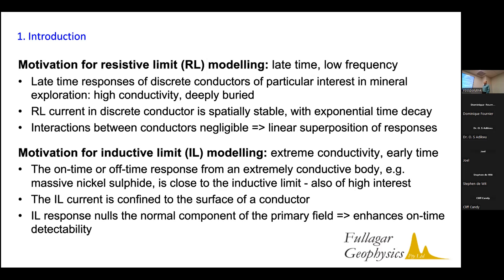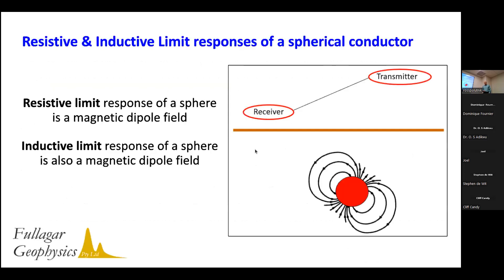Likewise in the inductive limit, especially when looking for nickel, we often encounter extremely good conductors that respond essentially in the inductive limit — the current confines to the surface of those bodies. In the inductive limit, the response from a sphere or any ellipsoid can be modeled using magnetostatic methods. So both in the resistive and inductive limits we can use magnetostatic methods; what's static in both cases is the current distribution.